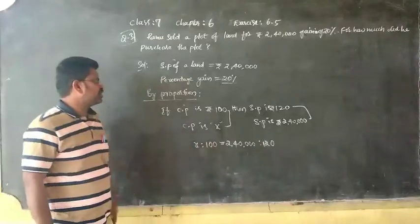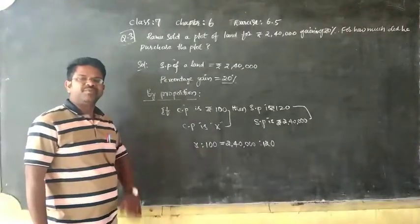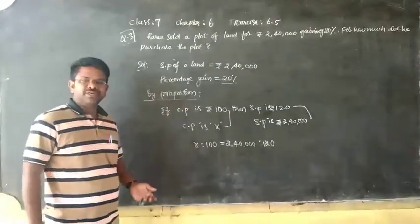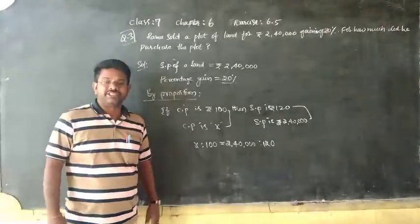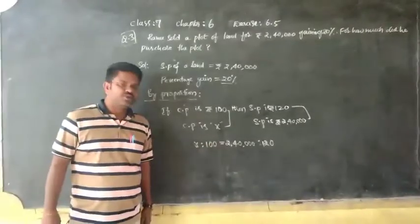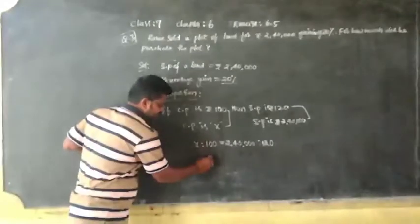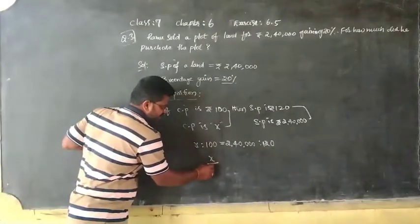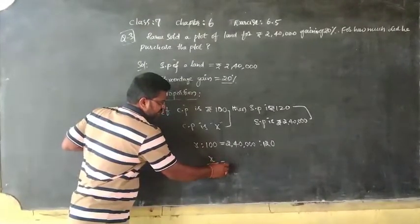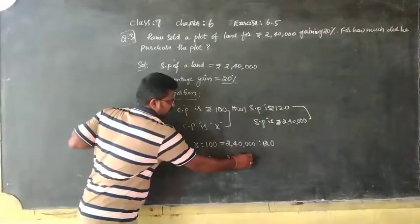If two ratios are in proportion, they have to follow some rule and regulation - it has some property, you know? The product of means equals to product of extremes. Either you can do like this: X is to 100 can be written as X by 100, equals 2,40,000 by 120.